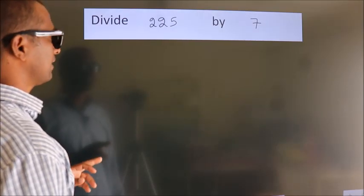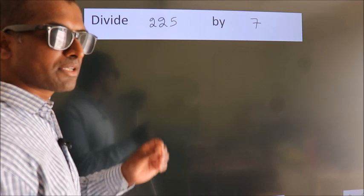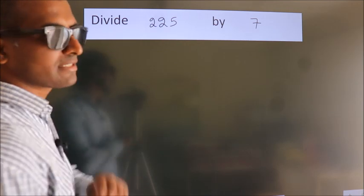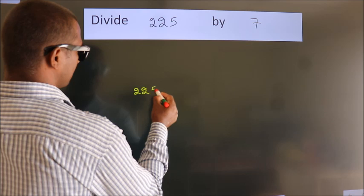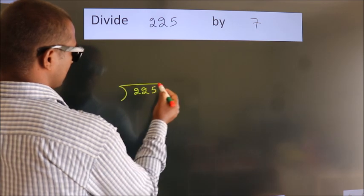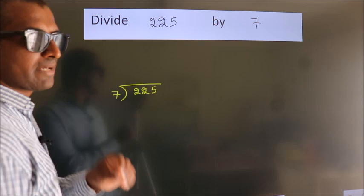Divide 225 by 7. To do this division, we should frame it in this way. 225 here, 7 here. This is your step 1.